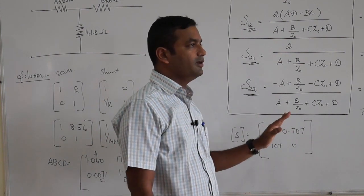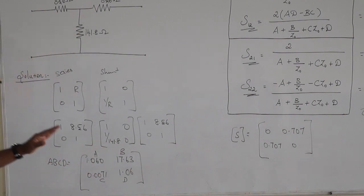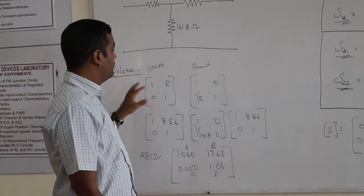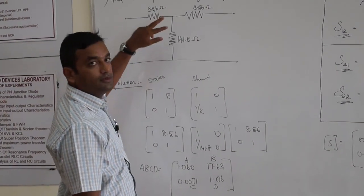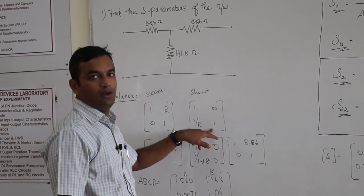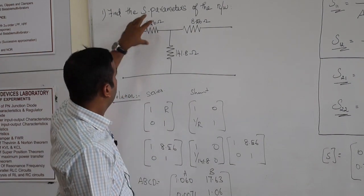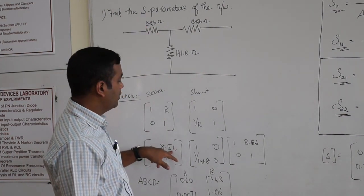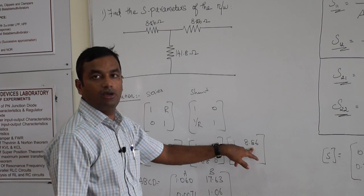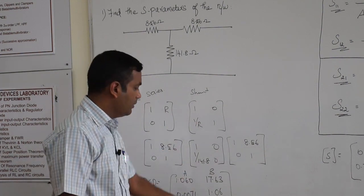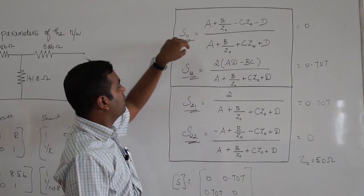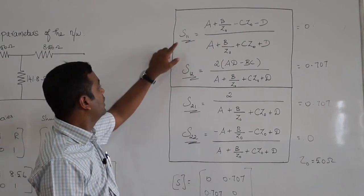This is the first type of problem we have solved. To recap the steps: first, write down the ABCD matrix of the network, where a series element has ABCD = [1, R; 0, 1] and a shunt element has ABCD = [1, 0; 1/R, 1]. Here, the series elements use 8.56, the shunt element uses 1/141.8, and the last series element also uses 8.56. Second, substitute the computed values of A, B, C, and D into the conversion equation to obtain S11, S12, S21, and S22, using Z₀ = 50 ohms.